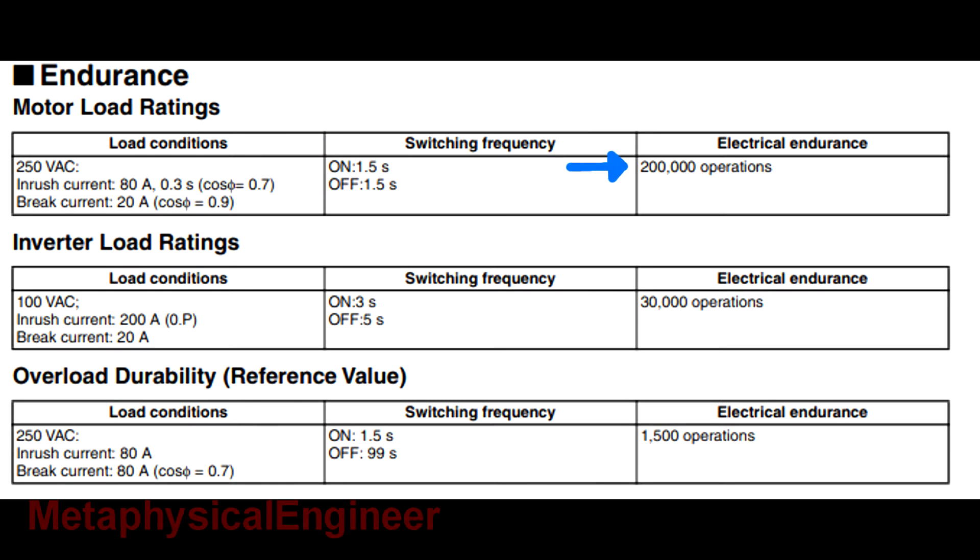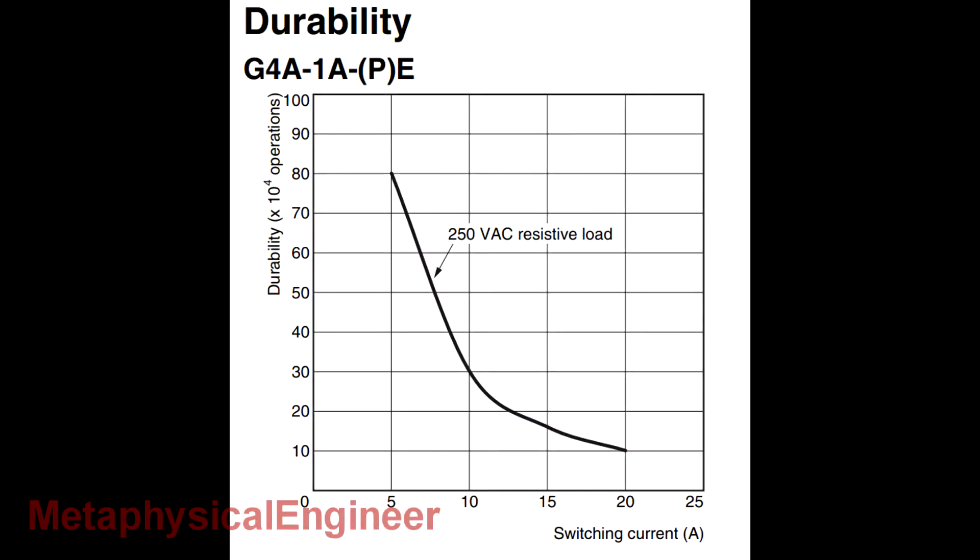this one's rated for 200,000 cycles. Even switching an inverter which really hammers it with inrush, it manages 30,000 cycles. Interesting enough, the resistive load chart is a bit more conservative, but I might trust this one a little bit more given the other listed conditions.